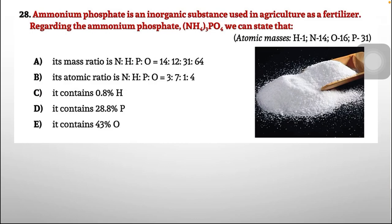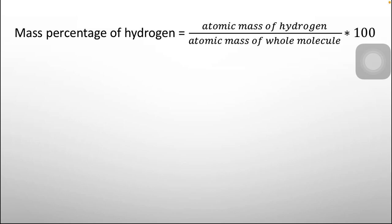Question 28: Ammonium phosphate (NH4)3PO4 is an inorganic fertilizer. We need to evaluate: A) mass ratio N:H:P:O equals 14:12:31:64; B) atomic ratio N:H:P:O is 3:7:1:4; C) it contains 0.8% hydrogen; D) it contains 28.8% phosphorus; E) it contains 43% oxygen. Option A appears to be the simplest form of elemental ratios in the formula, but we need to verify the percentages to confirm.